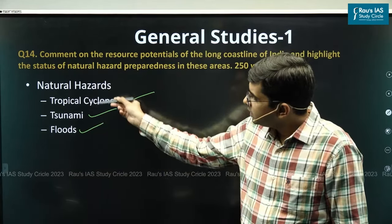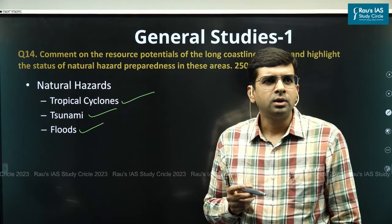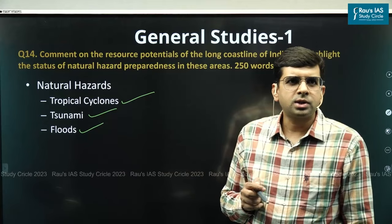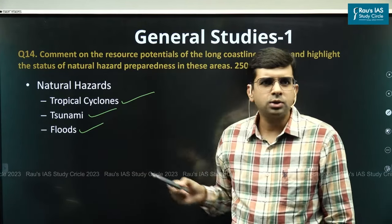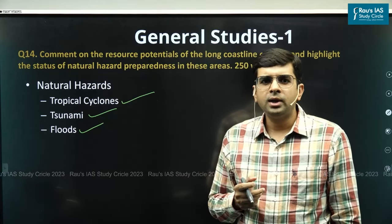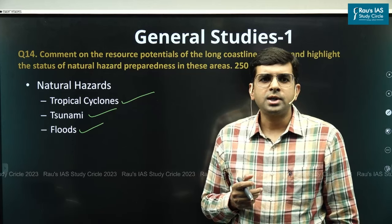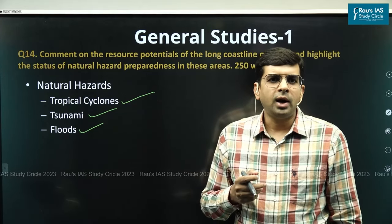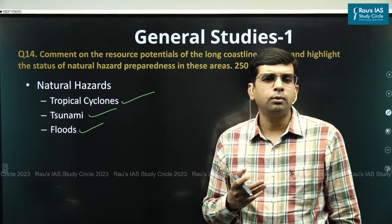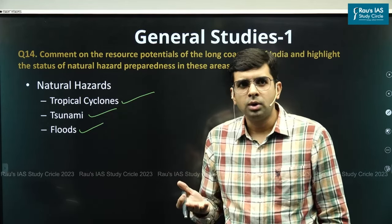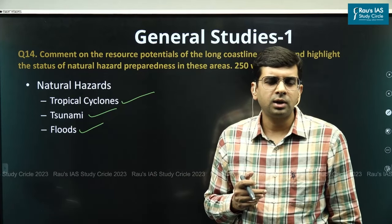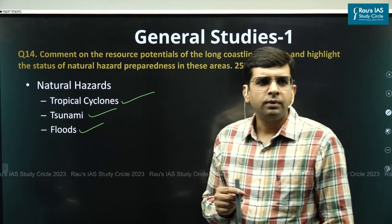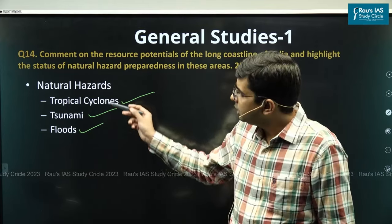After specifying these three natural hazards, we need to discuss what India is doing along the coastline to reduce the risks associated with them. In 2005, India passed the Disaster Management Act in Parliament, which empowers the National Disaster Management Authority (NDMA) to handle natural hazards so they do not turn into disasters, and defines the course of action at the ground level. We should briefly outline the actions of NDMA along the coastline pertaining to these three hazards.